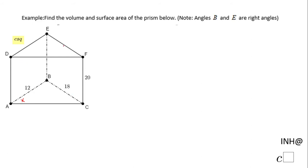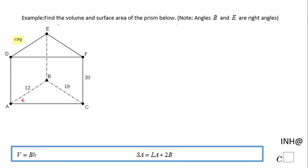We call this a triangular prism. Notice, the volume of this triangular prism is going to be area of the base times the height. In fact, that formula works for any prism.